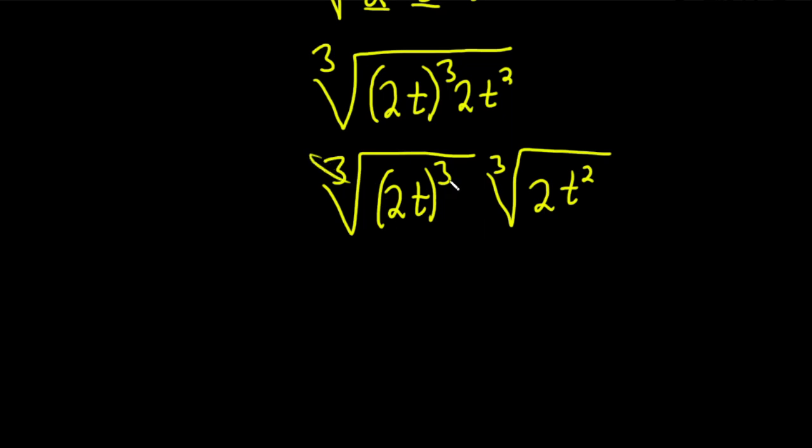And these cancel. So we just have 2t. And then here we have the cube root of 2t squared.